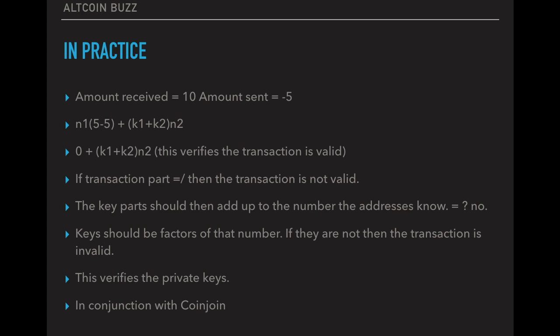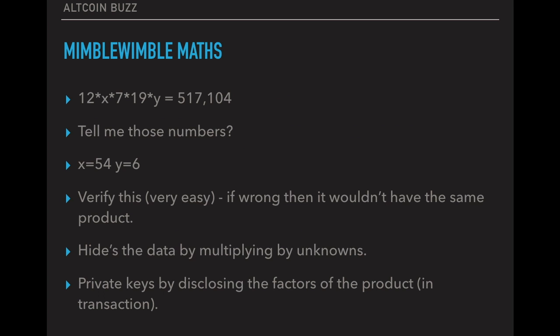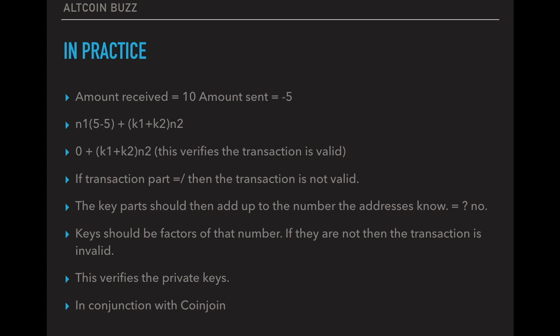So if the transaction part, so the first part, the N1 times five minus five does not equal zero, then the transaction is not valid. So say for example, it equals one or two or minus seven, then the transaction isn't valid and that transaction's canceled. So then the key parts should then add up to the number, the addresses number. So that big number, if you go back to, you see that 517,000, if you get the key parts times that big number, they should add up to that number and they should be factors of that number. So once all the factors are added to times together, they should add up to that big number. And that shows that the private key is right. And it shows as a private key, which is perfect. And it verifies the private key. So it's done the two things it needs to do for money.